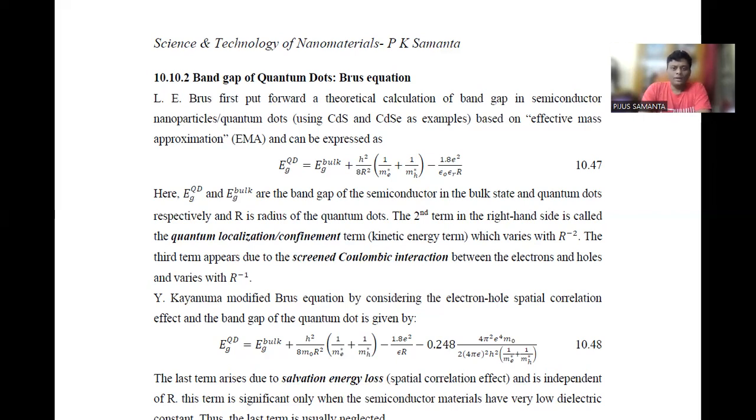A semiconductor has a band gap, represented by E_g^bulk in bulk state and E_g^QD in nanoscale when it is in the form of a quantum dot. It has two additional contributions in the nanoscale.